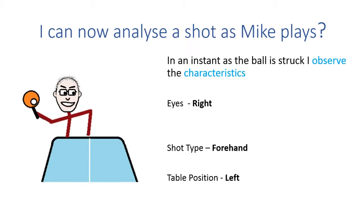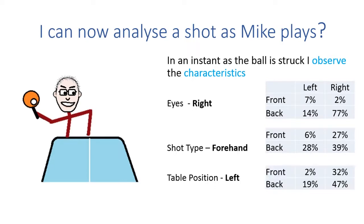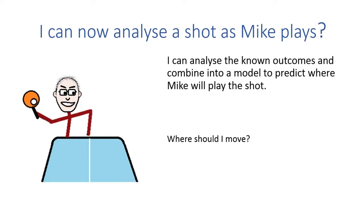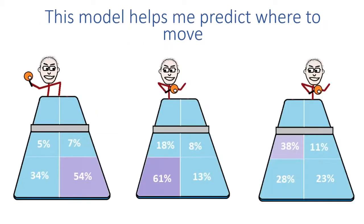I can now use this data to analyse how Mike is going to play a shot. In the instant that the ball is struck, I observe the characteristics. If we have a look at Mike here — his eyes are pointing to the right, he's playing a forehand, and he's stood to the left as I look at him. Each one of those individual characteristics has its own data set. I can analyse those shots together and create a model which matches the data overall, and I can see that based on this shot, I should move to the back and the right. 54% of the time, Mike's going to play the shot there. I can use this model to predict each individual shot Mike's going to play against me.